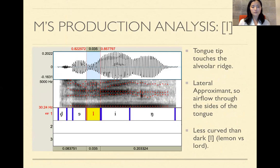So this is a production analysis for her /l/. Her tongue tip touched the alveolar ridge. So it's not exactly a little farther back than it was for E. And it is a lateral approximant. So there is airflow through the sides of the tongue and nothing obstructing it. And we see that it's, and production wise, the /l/ for the light /l/ that she used was less curved than the dark /l/. So like /l/ in lemon versus /l/ in lord. It's less curved. And so we'll hear each segmented sound.